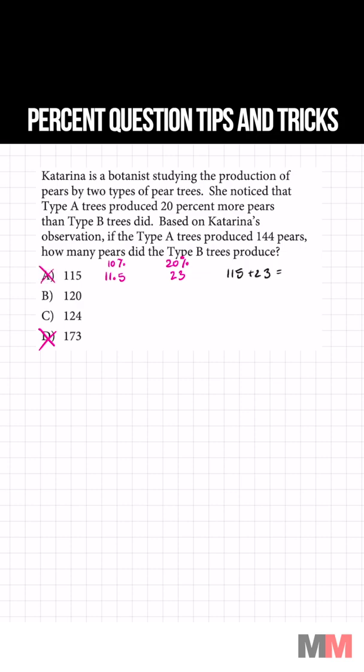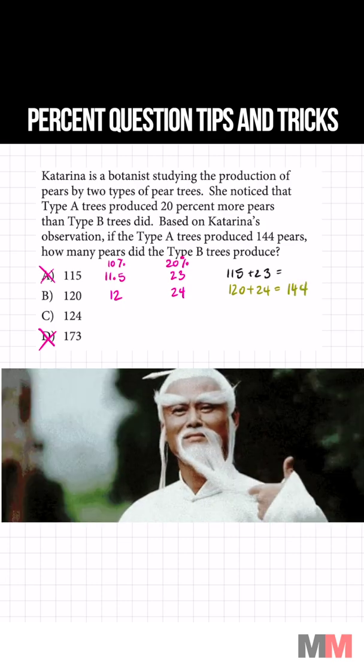Now let's do B. 10% of 120 is 12. 20%, just double it, will be 24. 120 plus 24 equals 144 and that is the number that we're looking for.